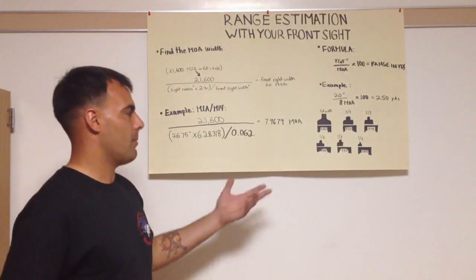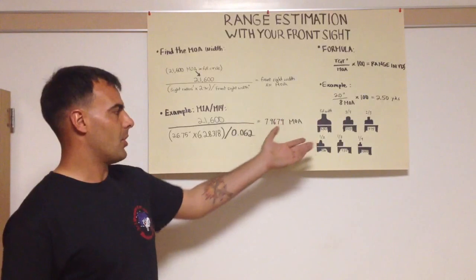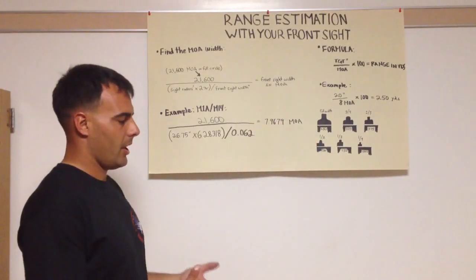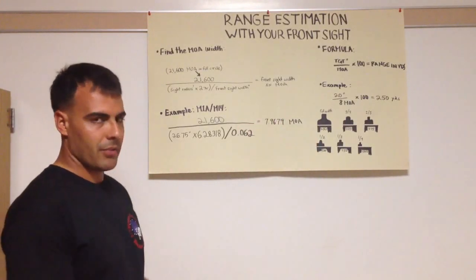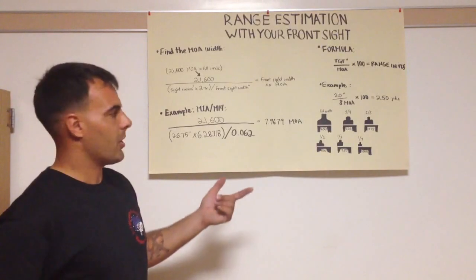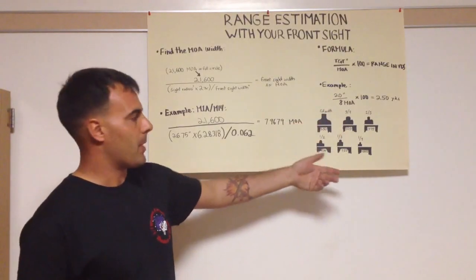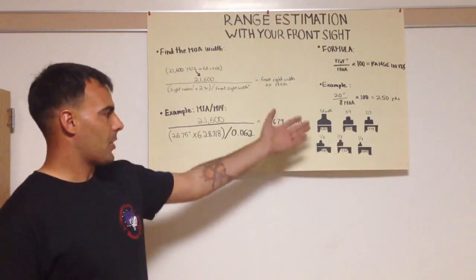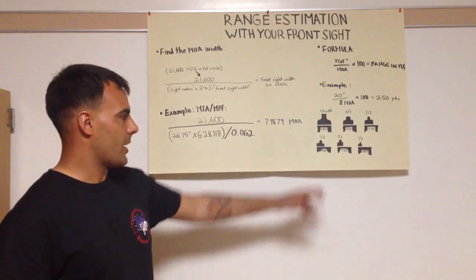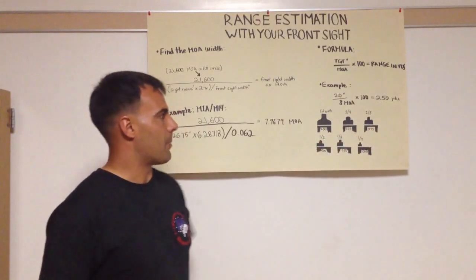So with an 8 minute of angle sight, how do you find two-thirds or one-third in minutes of angle of 8? I just took 8 divided by 3, that will give me one-third, and if I times that number by 2, that will give me my two-thirds. So I did the math already just so I can get these two numbers down and get them memorized.